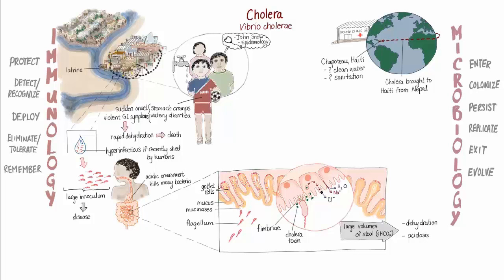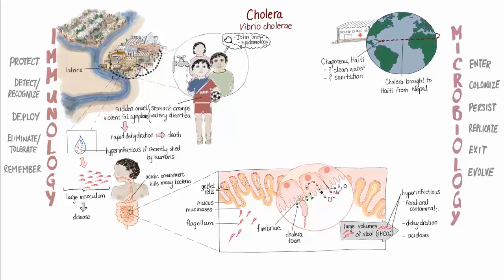The copious amounts of diarrhea seen in cholera patients is actually beneficial to the organism that causes the disease. Vibrio cholerae replicates rapidly inside the small intestine, and the watery stools allow the newly produced bacteria to exit the host and be transmitted to another, usually via fecal-oral contamination. This is why, in parts of the world where running water and sanitation aren't available, cholera can spread quickly and easily.